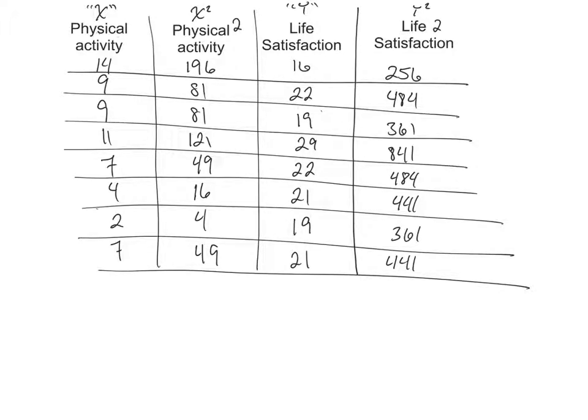So we have the X's and the Y's, their raw scores squared. And now we're going to try to find some sum ofs, right? Because what we want to do is you want to... Let's start with the X axis. So the sum of our X's, if I add up 14 and 9 and 9 and 11, and I keep going, right?